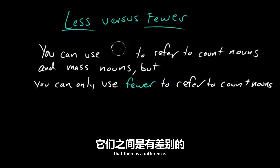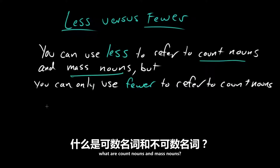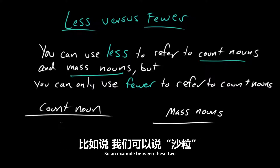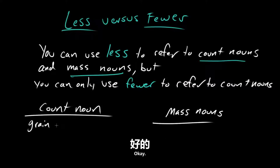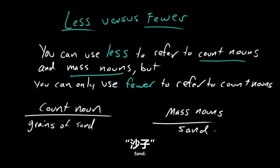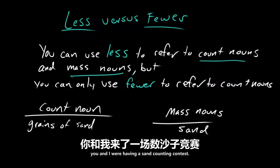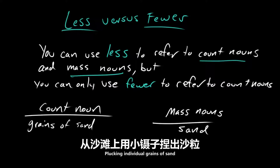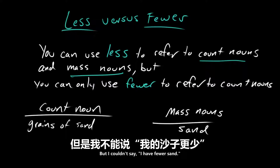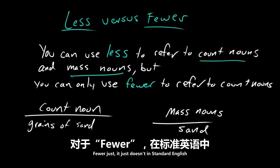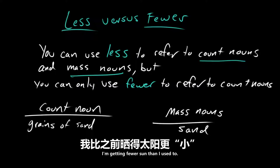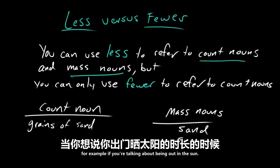So you are acknowledging that there is a difference. Definitely. So, Rosie, what are count nouns and mass nouns? Count nouns are essentially nouns that you can count individually as an individual entity. An example: a count noun would be grains of sand — I can count grains of sand individually. But you couldn't count sand itself. If you and I were having a sand-counting contest, plucking individual grains from the beach with tweezers, I could say I have fewer grains of sand than you do. But I couldn't say I have fewer sand. Fewer just doesn't go with mass nouns in standard English. You would say I'm getting less sun than I used to.